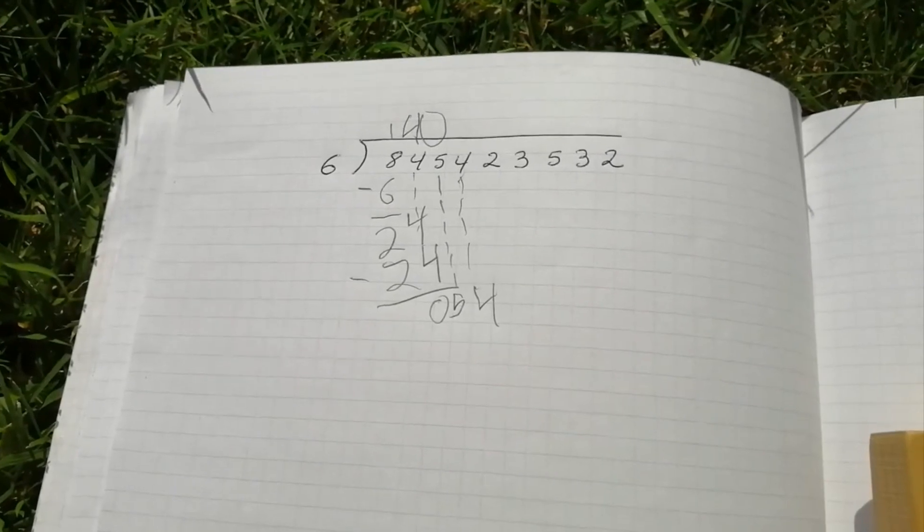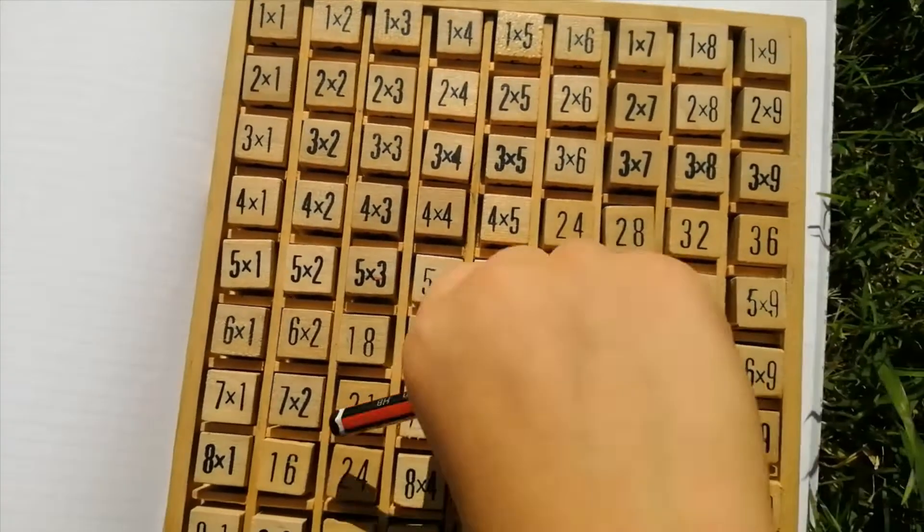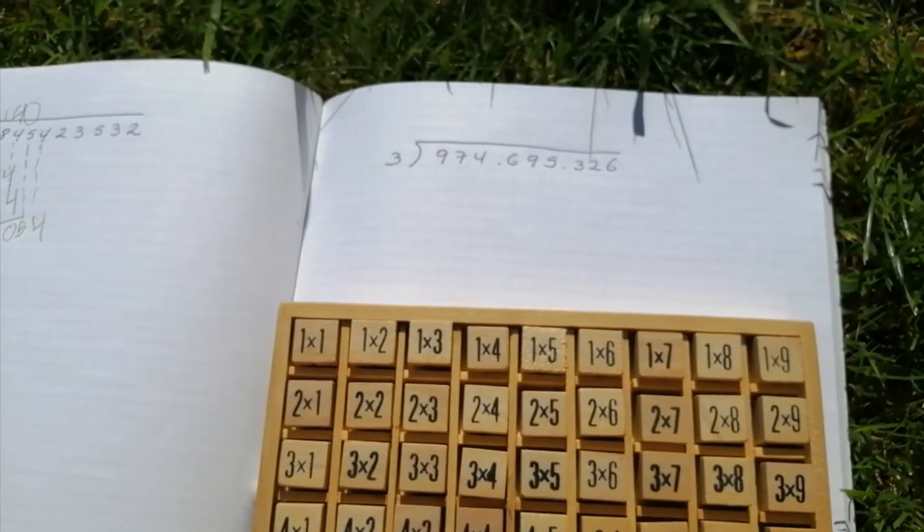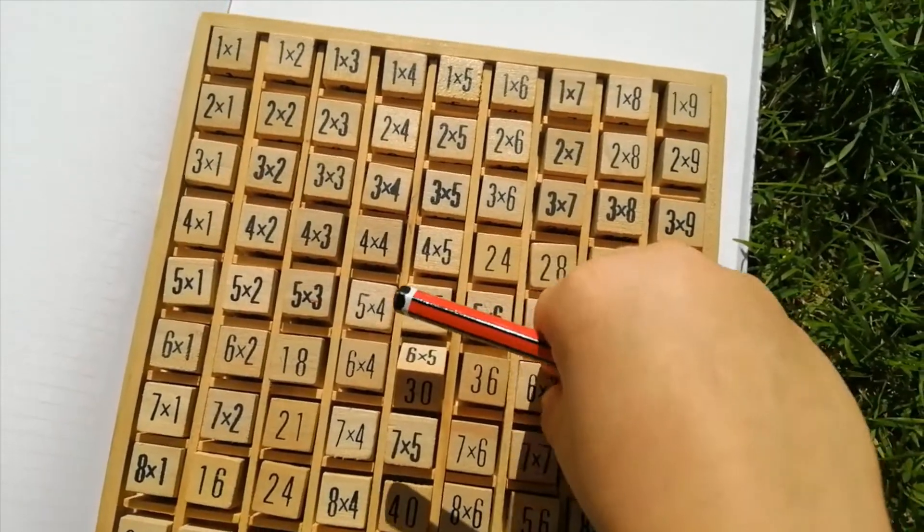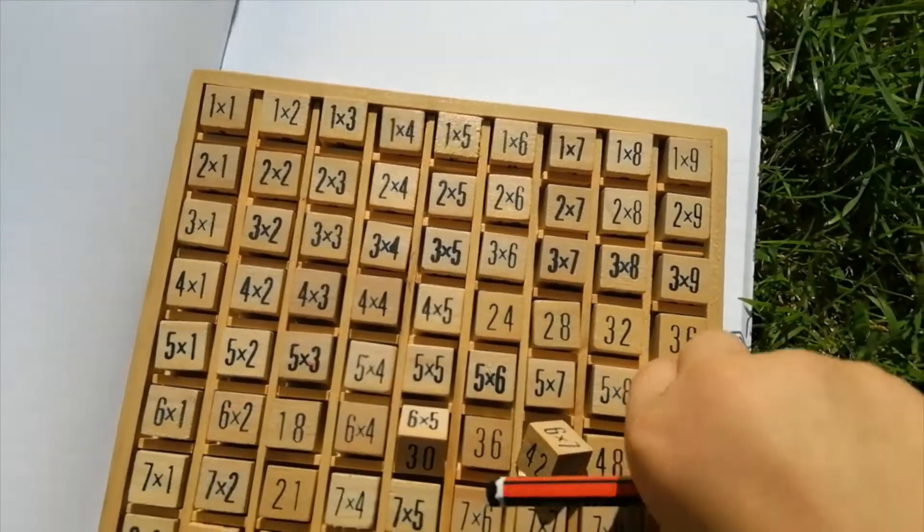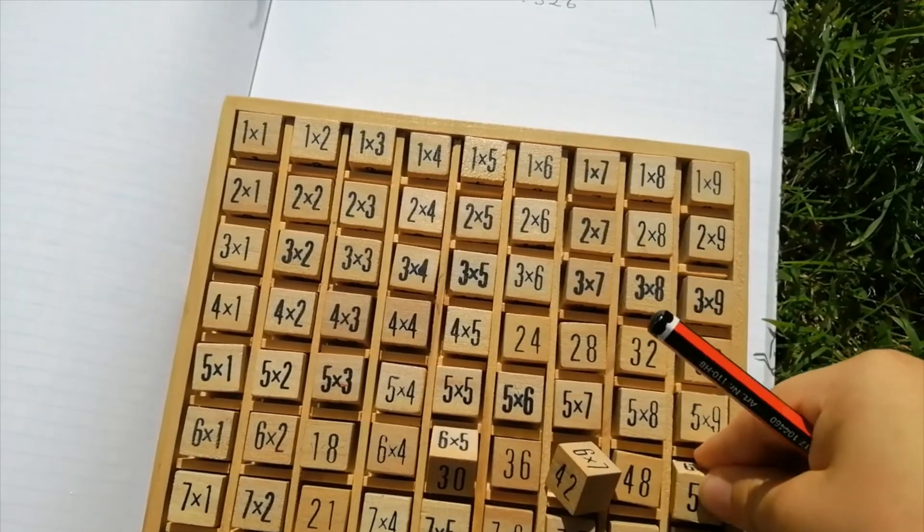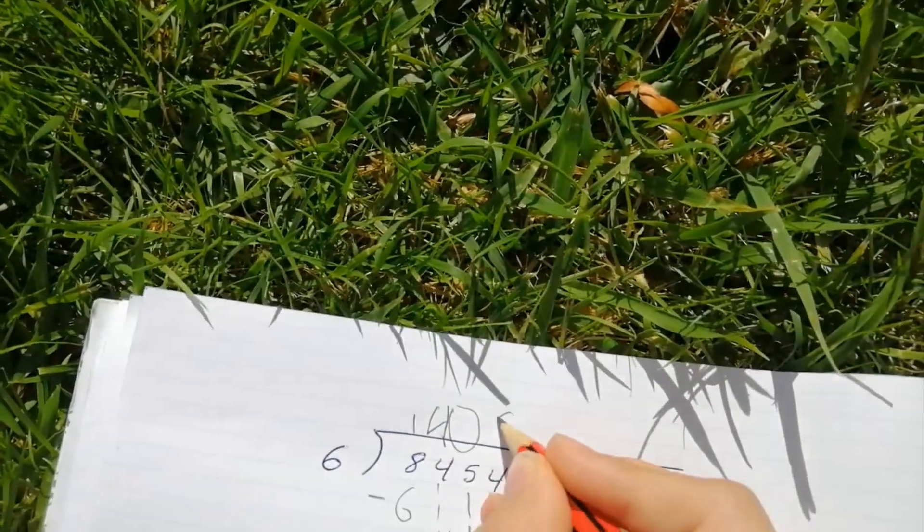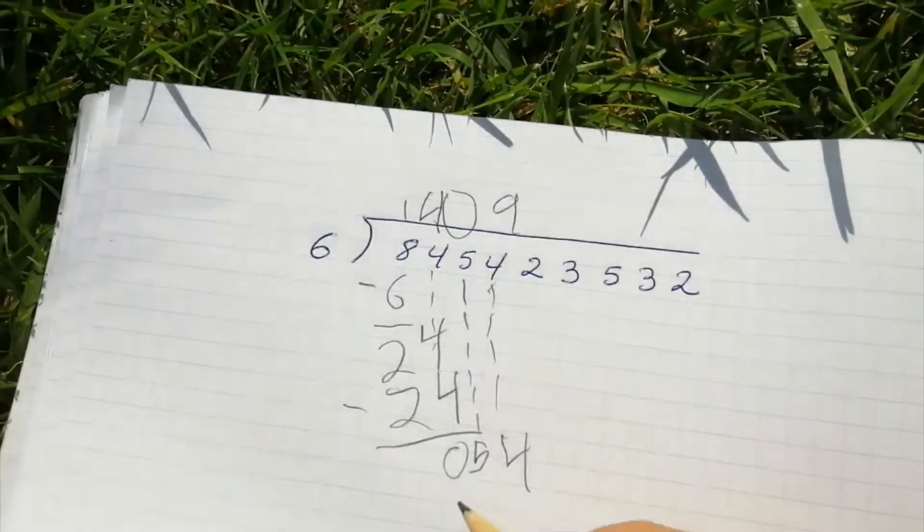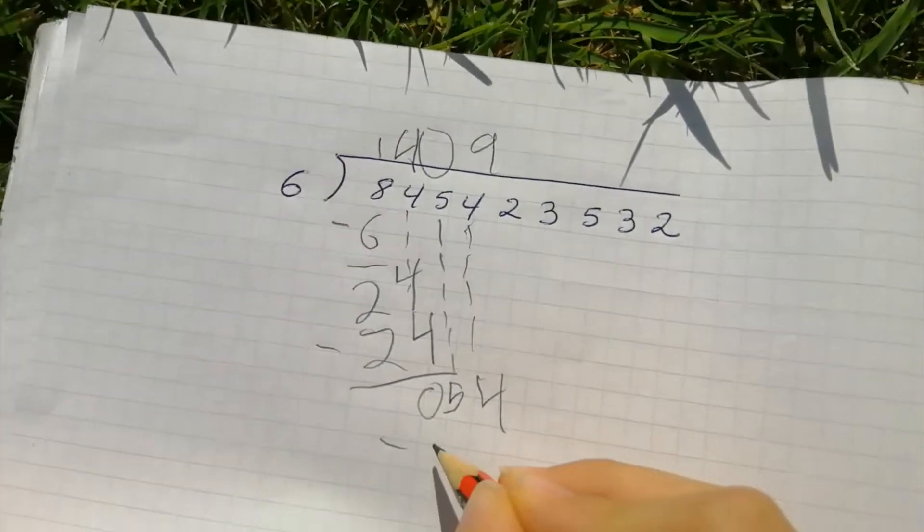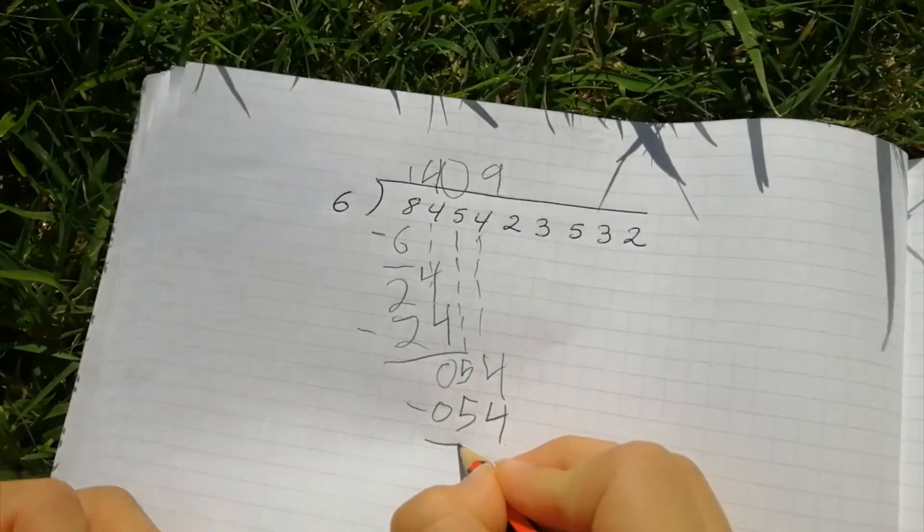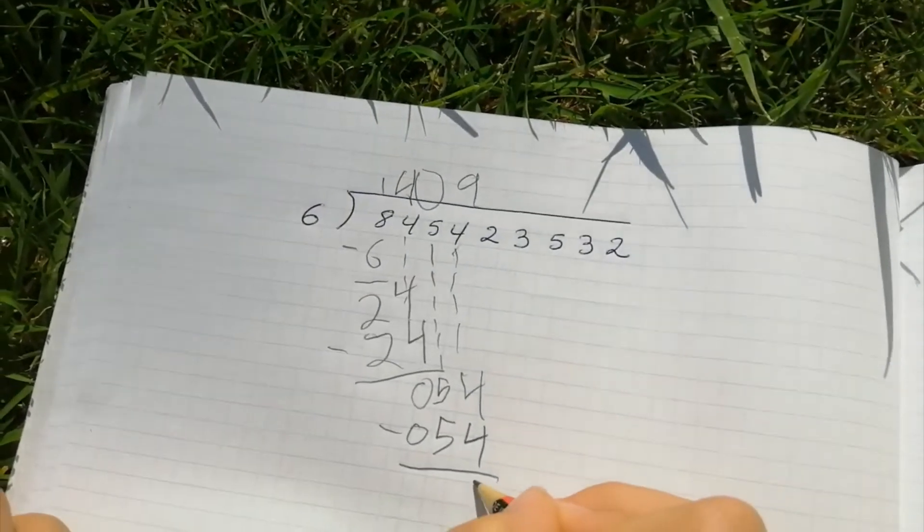What is nearly or exactly as fifty-four? It is forty-eight. It's number nine. And six times nine is fifty-four. So put minus zero fifty-four equals zero.